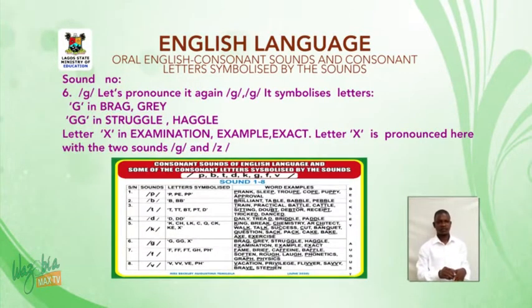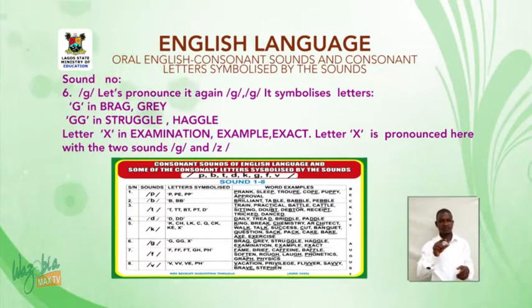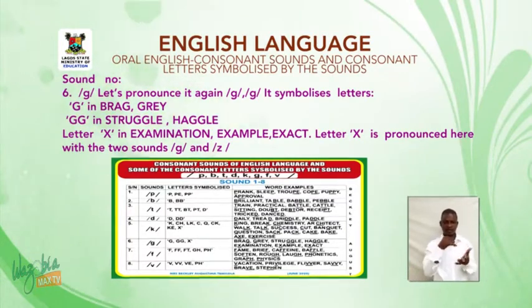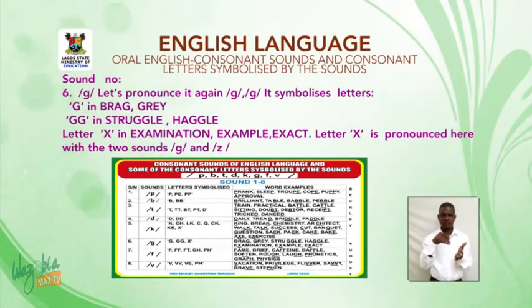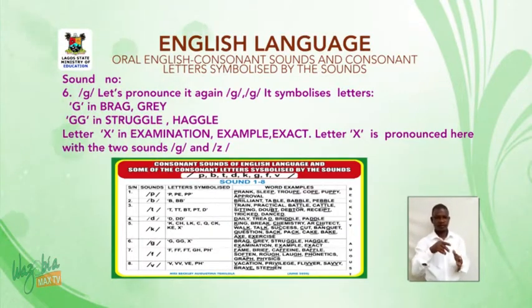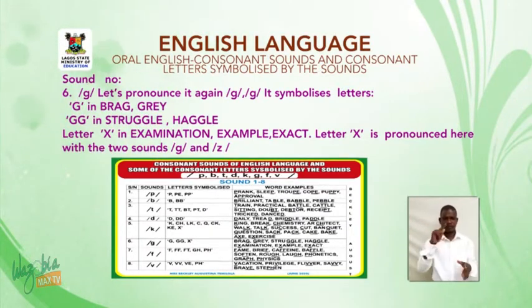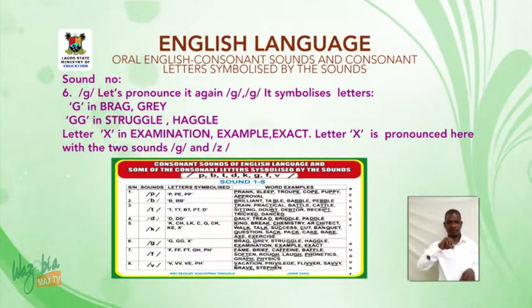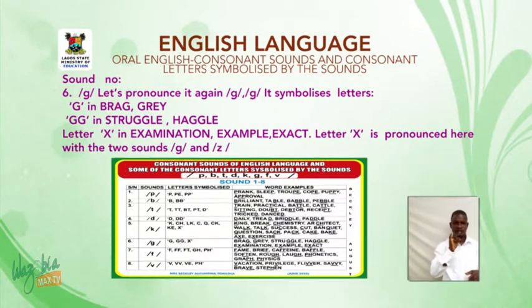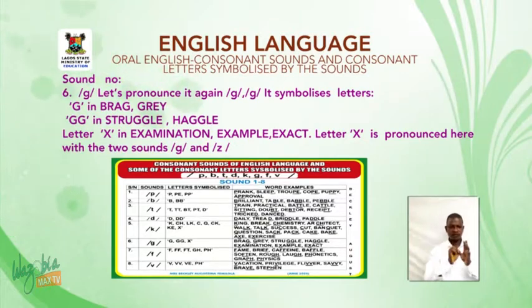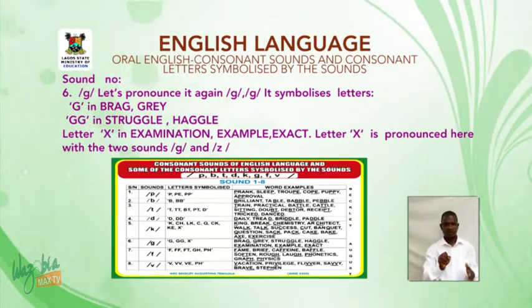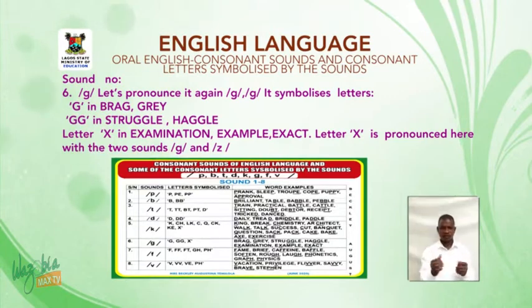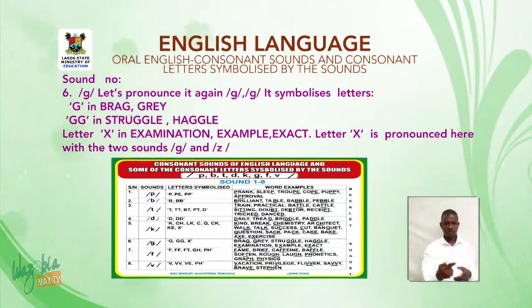Sound number six: /g/. It symbolizes letters G in brag, gray; GG in struggle, huggle; and letter X in examination, example, exert. Letter X is pronounced here with the two sounds /g/ and /z/.